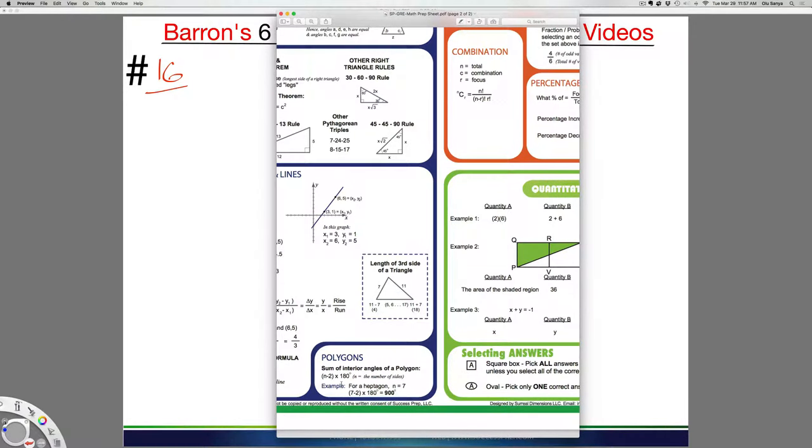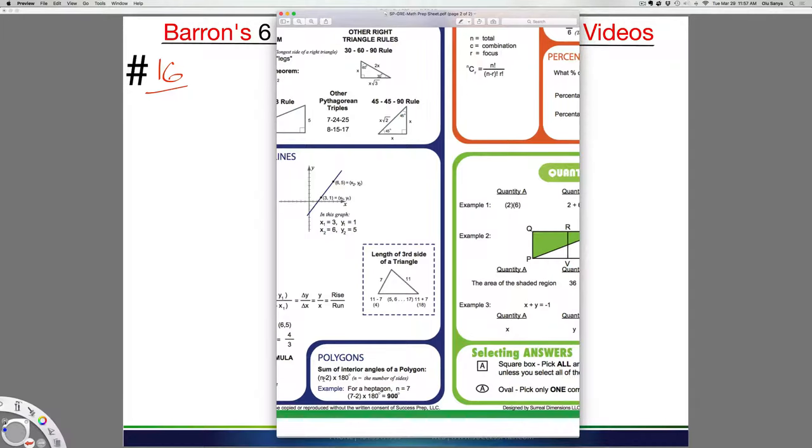So a regular polygon's formula is n minus 2 times 180. So for example, in a heptagon, like in my example over here, the heptagon has seven sides.